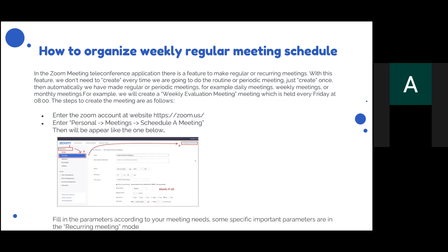The first step is to enter your Zoom account at the website https://zoom.us. Then go to Personal Meetings, click Schedule a Meeting, and a form will appear as shown in the picture below.